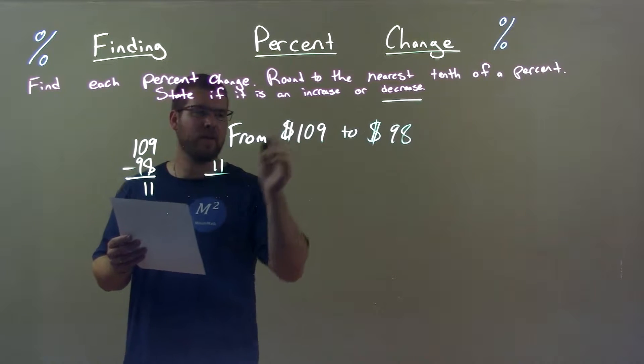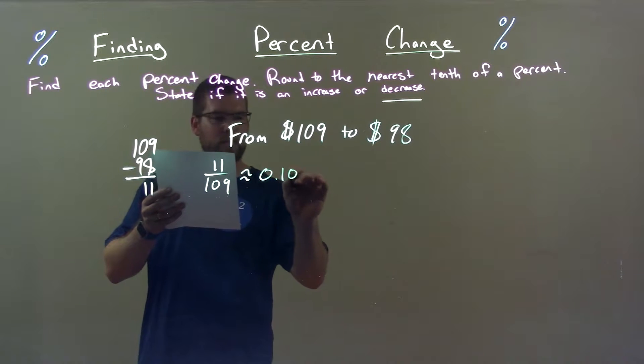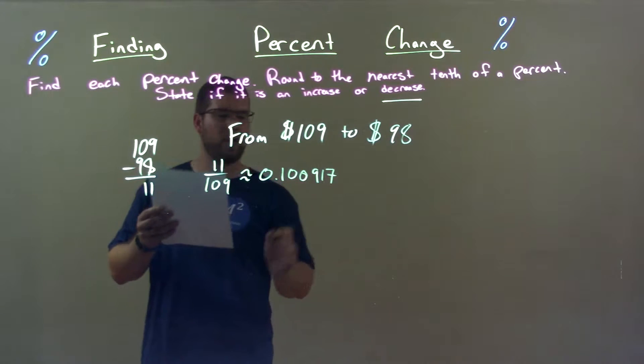Take that 11, divide it by the first number, $109, and we get approximately 0.100917.